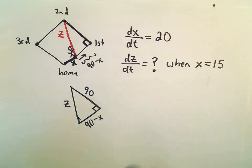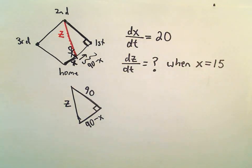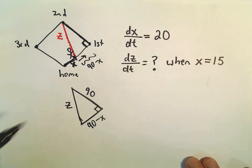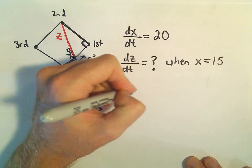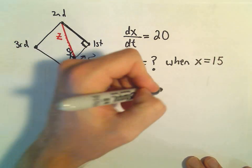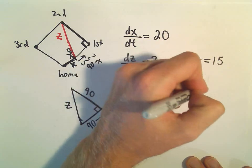So, alright, I think we've got a nice little diagram. We've labeled our rates. Now we need to produce an equation. But I think here we can just use Pythagorean theorem. We could say 90 minus x squared plus 90 squared equals z squared.